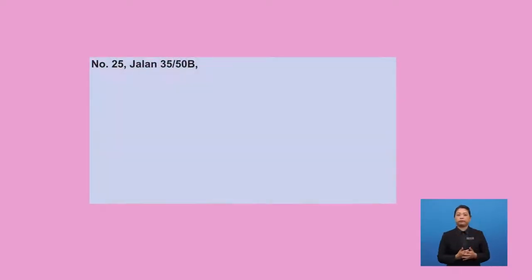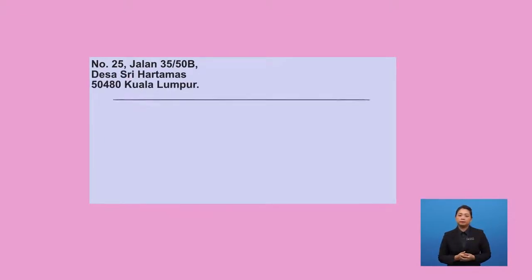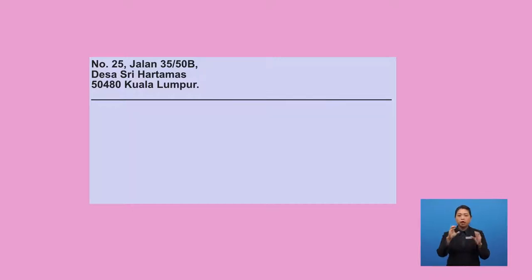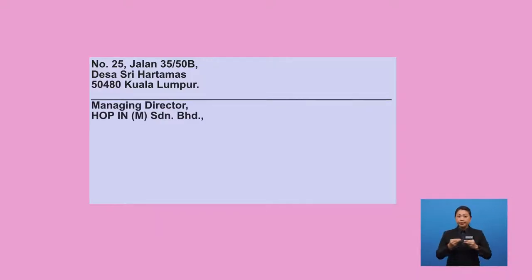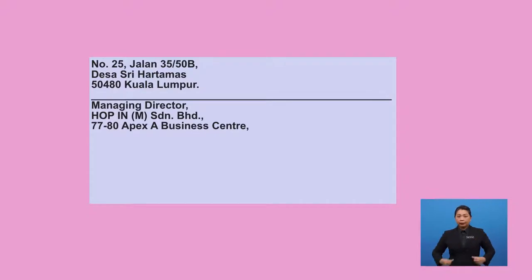Let's draw a line to separate the next section. Now we will write the recipient's address. The recipient is the person who will receive our letter. I may have to look for the company's address from the app. I need to write this down under the line: Managing Director, Hop In (M) Sdn. Bhd. — M here stands for Malaysia — 77-80 Apex A Business Center, 48500 Petaling Jaya, Selangor.